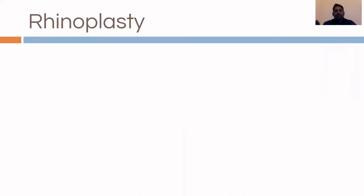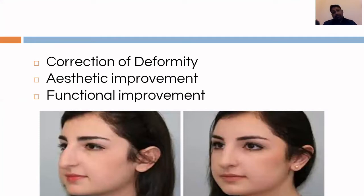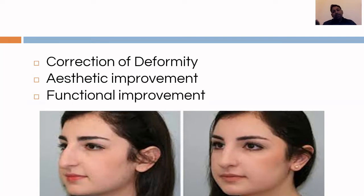Rhinoplasty involves aesthetic improvement of the nose, correction of deformities, and also functional improvement. We improve nasal blockage through open septo-rhinoplasty. Unlike the older approach where septoplasty was done from inside, open septo-rhinoplasty uses an external incision for better improvement of the nasal passage. We also correct the nasal valve area. Today I will focus more on correction of deformities and aesthetic improvement.